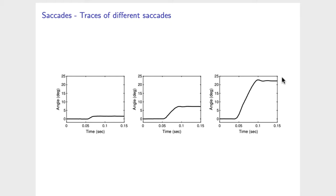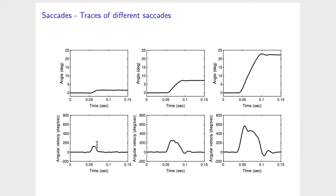Let us look at the angular velocity for each of these three saccades. For the small saccade, we see that the angular velocity reaches about 180 degrees per second. This saccade reaches an angular velocity of about 250 degrees per second. And the larger saccade reaches an angular velocity of about 500 degrees per second. The larger the saccade, the higher the peak velocity.